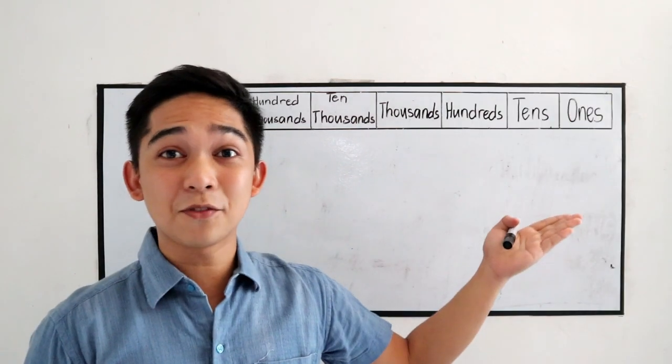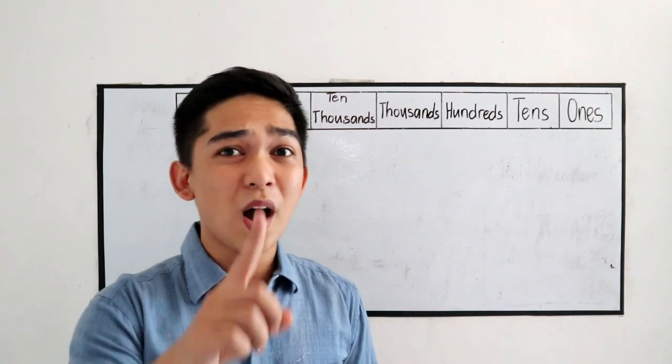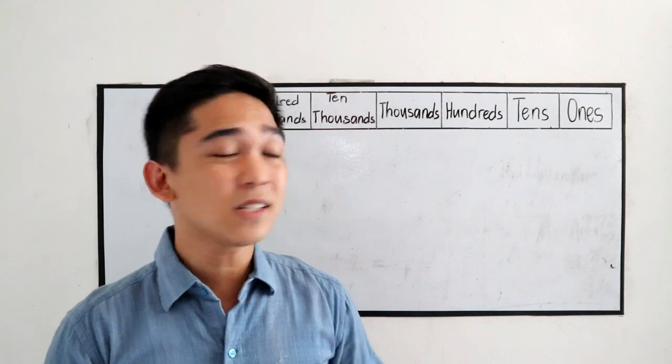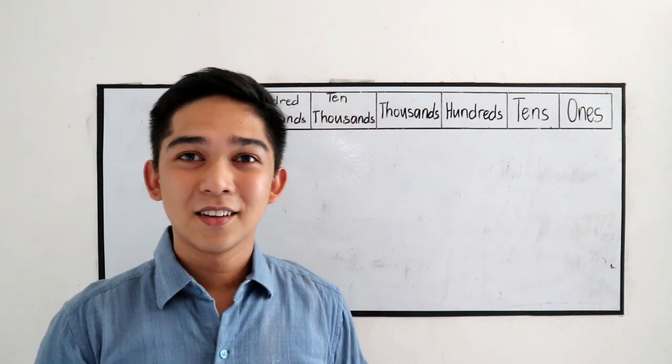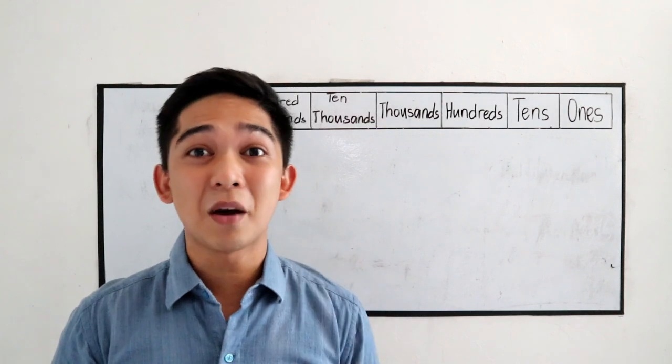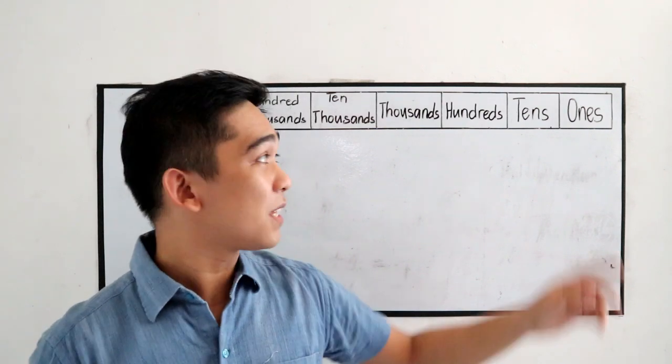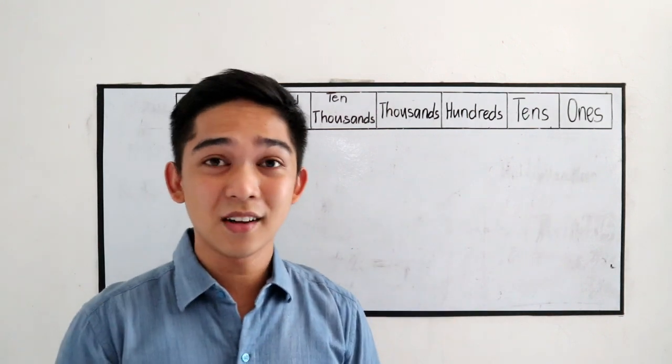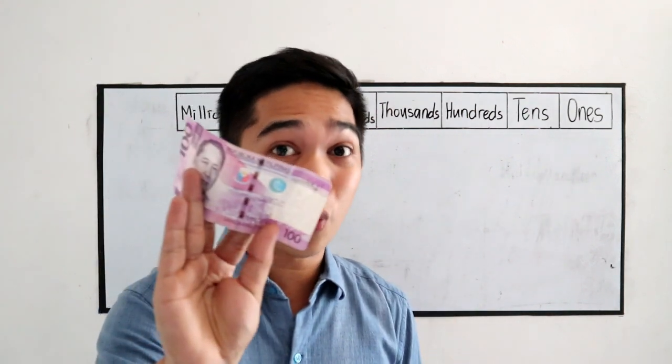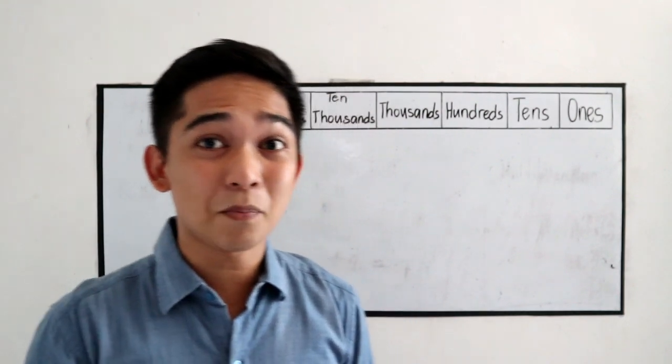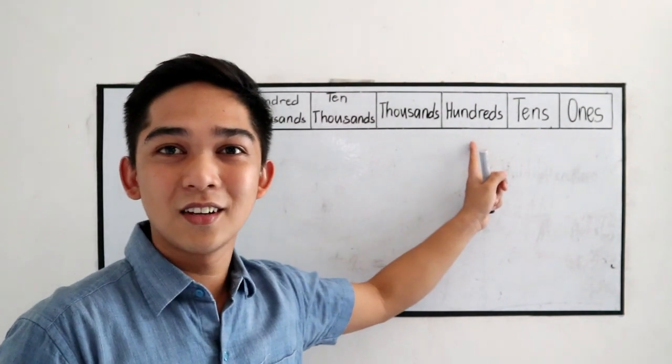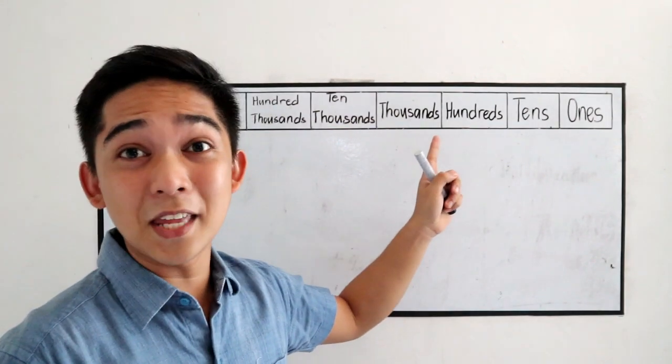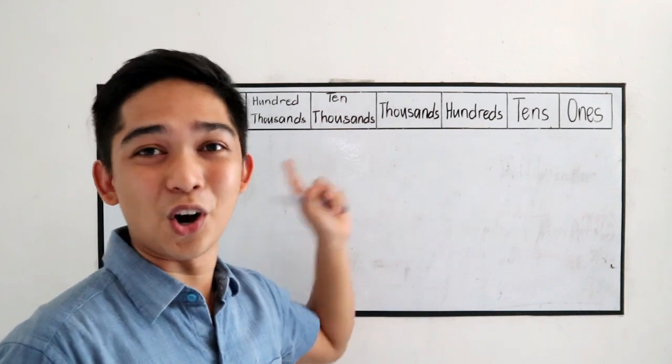Our place value indicates that if you have a one-digit number, that means you are in the place value of ones. If you have a two-digit number, you are in the place value of tens. And if you have a three-digit number, let's say the hundreds or 100, that is in the place value of hundreds. And if you have a four-digit number, that is in the place value of thousands, and so on.